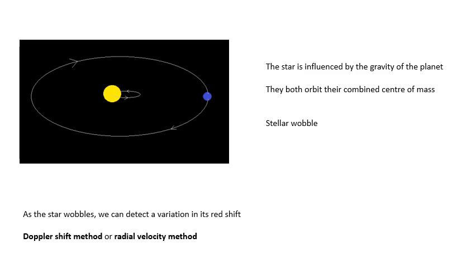First of all, there is a planet orbiting a star. Now strictly speaking, the star is actually also orbiting the planet. They both orbit their combined center of mass. So the star is gravitationally influenced by the planet. As the planet goes around the star, the star wobbles. They both orbit their combined center of mass and this produces this stellar wobble.